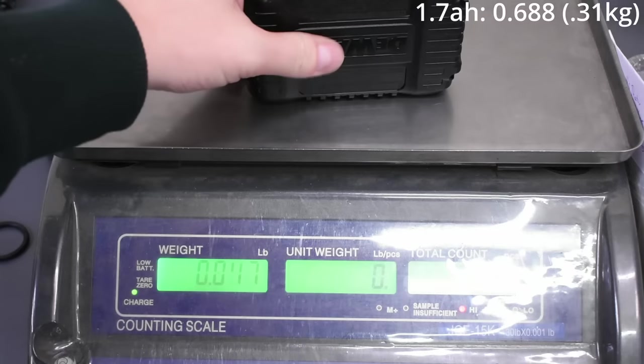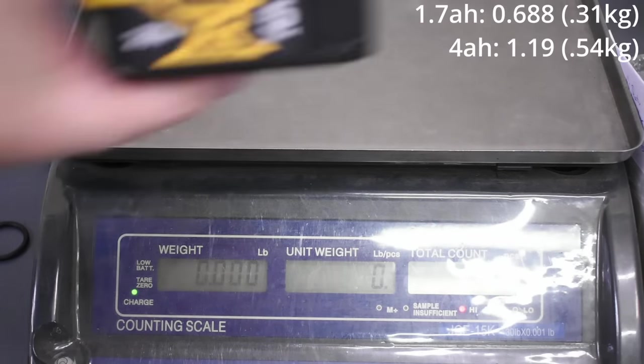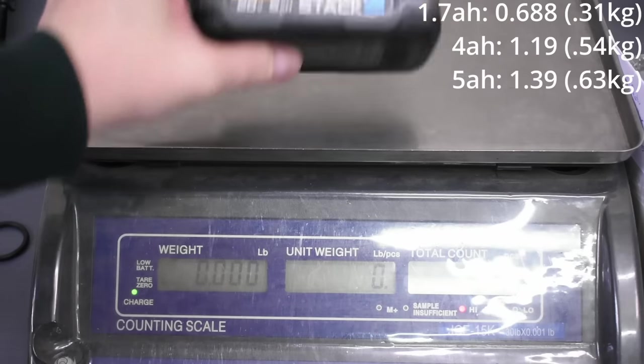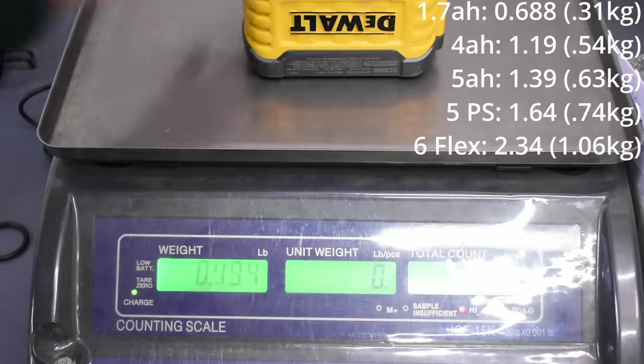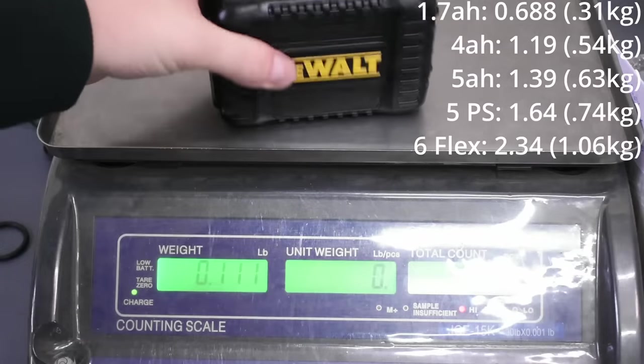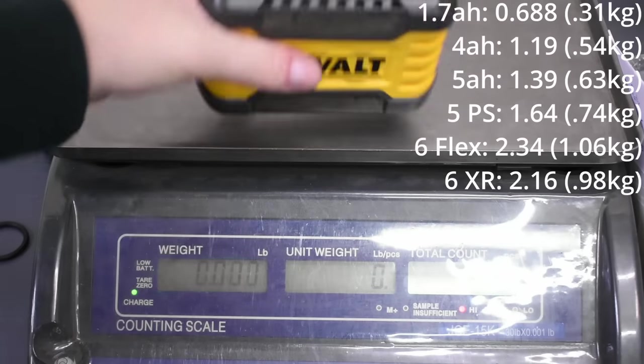Here's every 20 volt battery that we got. The original 1.7 Power Stack is a light 0.688 pounds, and the 4 amp hour compact 1.19, the 5 amp hour XR 1.39, and the 5 Power Stack is 1.64. Sure, it's less than the next step up 6 amp hour options, but so far this battery is just a bit more than we assumed in every category.